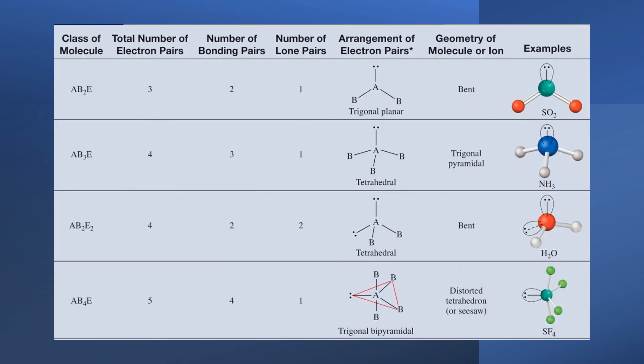Now, what if we don't just have atoms bonded to our central atom, but we also have lone pairs? Well, some interesting things are going to happen here. The first thing to take note of is what we call electron pair geometry is now going to be different from what we call molecular geometry. I'll go through some instances of that, and I think it will become clear.